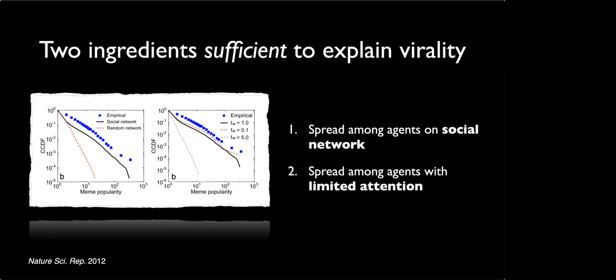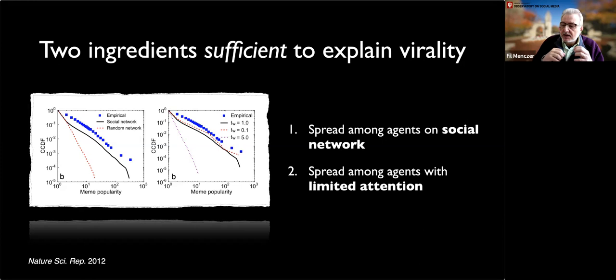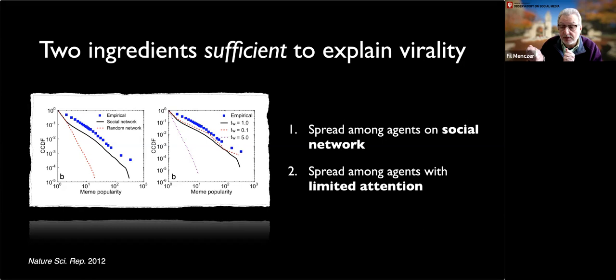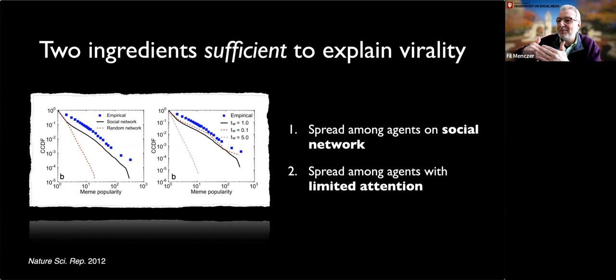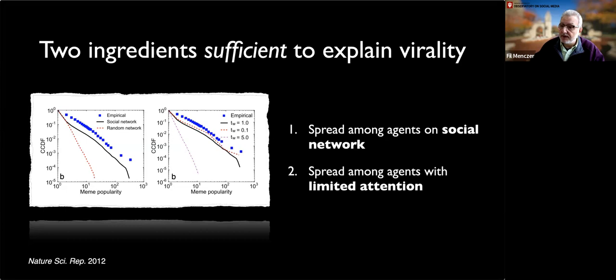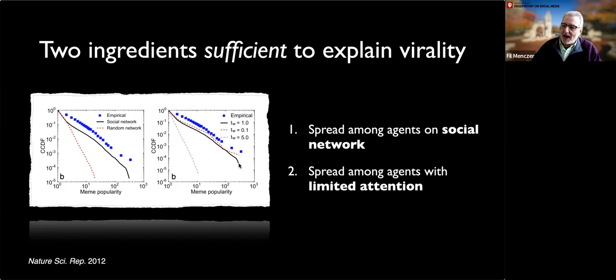Sinan summarizes: so at some point this creates a feedback loop which is amplified by the inequality of the network itself. Phil confirms: that's the hand-wavy intuition about what's going on. We could talk much more at length about it, but that's the core idea. Sinan thanks Phil for the clarification and Phil acknowledges it was a very good question.